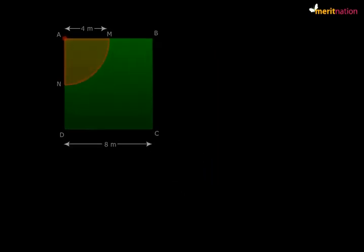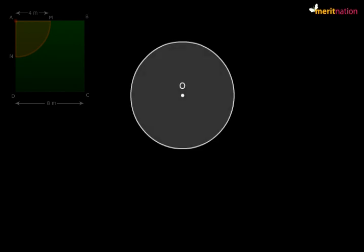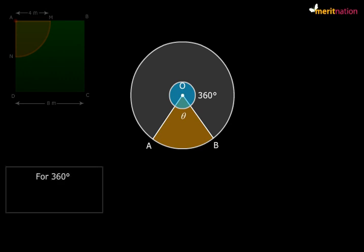So let us take a general circle. Look at sector AOB. The angle that subtends at the center is theta. It's time we use the unitary method. The angle formed at the center of the circle is 360 degrees. So this means for 360 degrees, the area of the circle is πr².